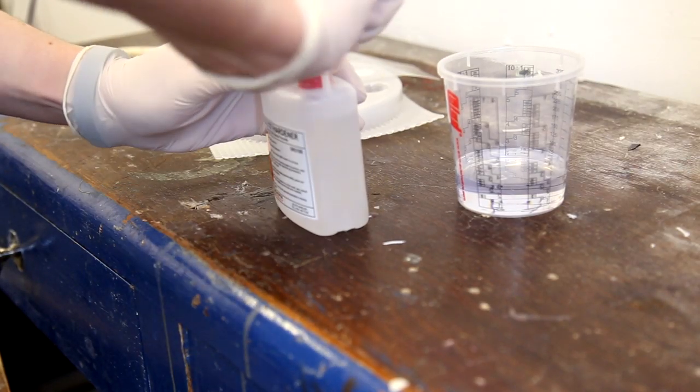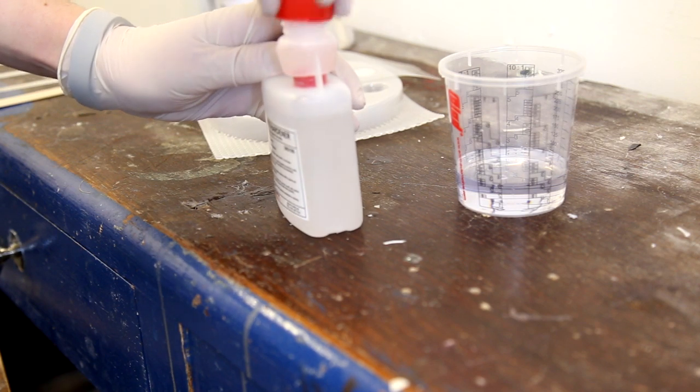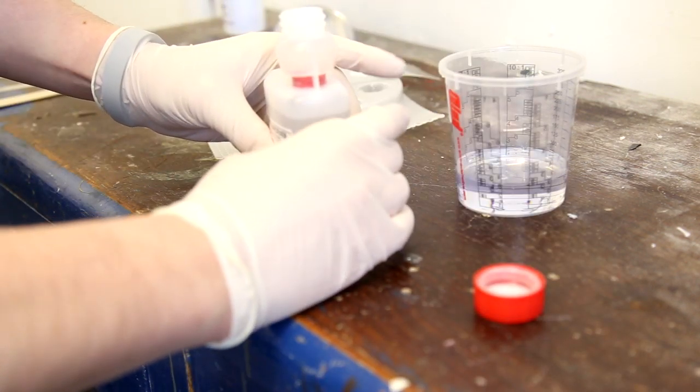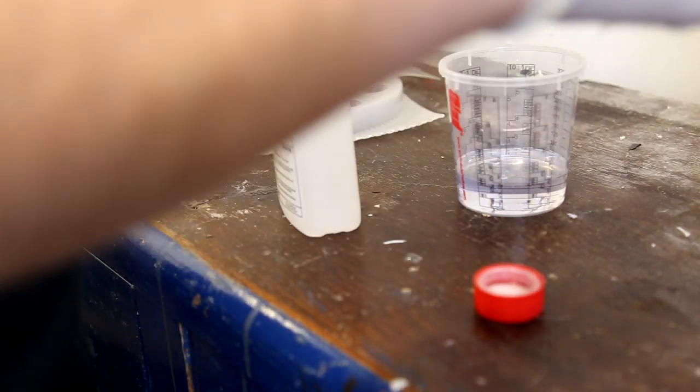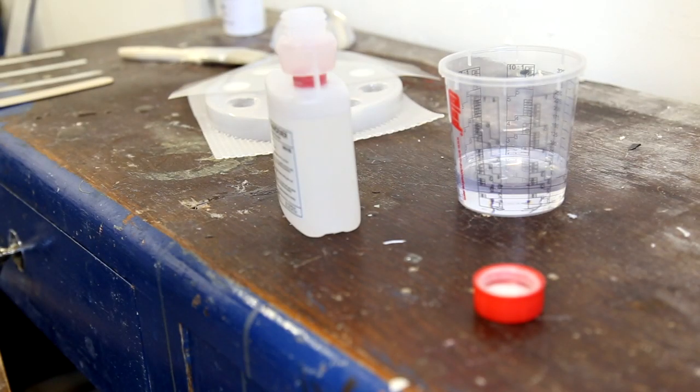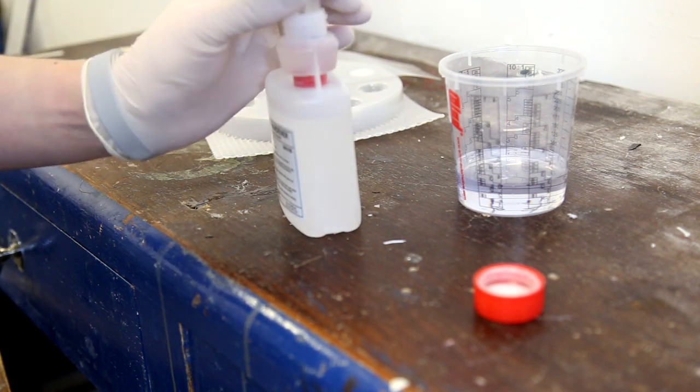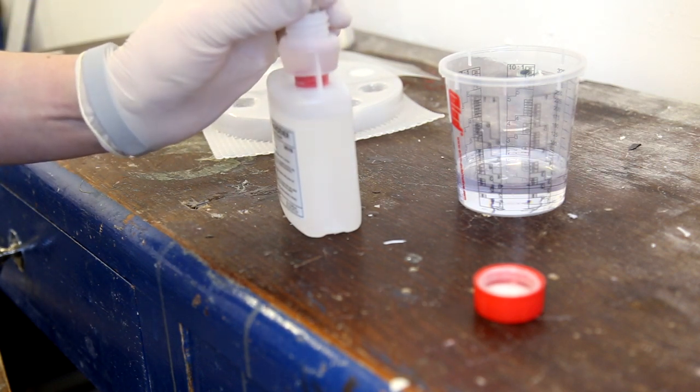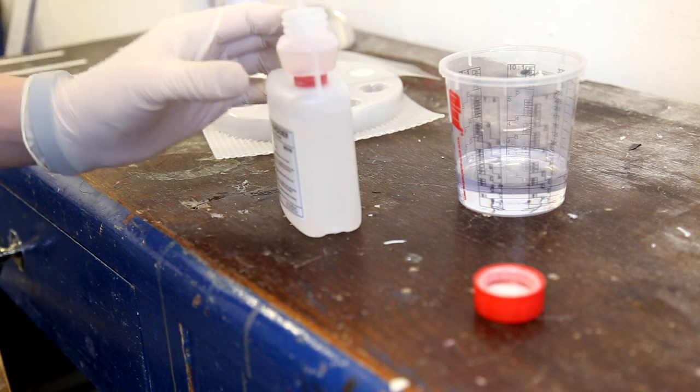I need to mix up some more resin, exactly the same thing again. 1% catalyst or a 1 to 100 ratio. This is the catalyst bottle that you get with the larger kits. As you can see, it makes it a lot easier to measure out the catalyst.